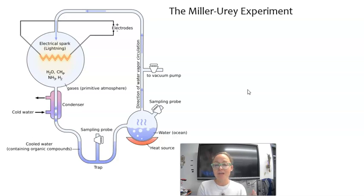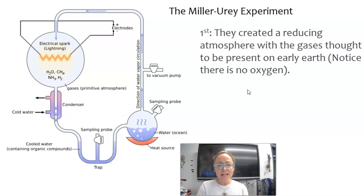The gases they put inside contained water, methane, ammonia, and hydrogen gas. They tried to recreate early Earth by first creating a reducing atmosphere with the gases that they thought were present. Notice there is no oxygen.